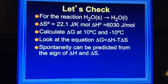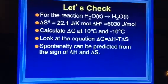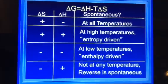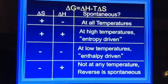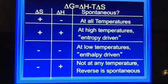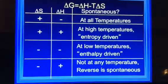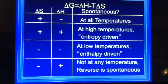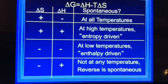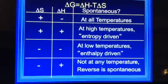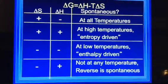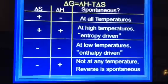Spontaneity can be predicted from the sign of delta H and delta S. Delta S is positive, delta H is negative, spontaneous at all temperatures. Delta S is positive, delta H is positive, at high temperatures it is entropy driven, it is spontaneous. Delta S is negative, delta H is negative, at low temperatures it's enthalpy driven. At delta S negative, delta H positive, it is not spontaneous at any temperature, but the reverse reaction is spontaneous.